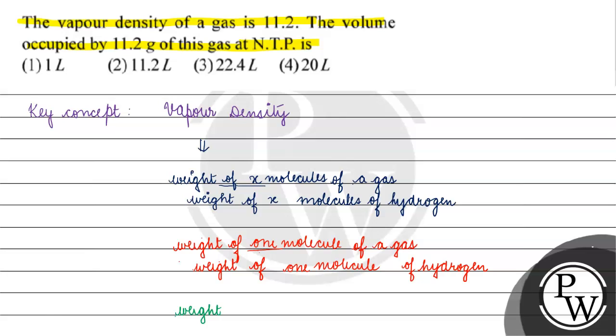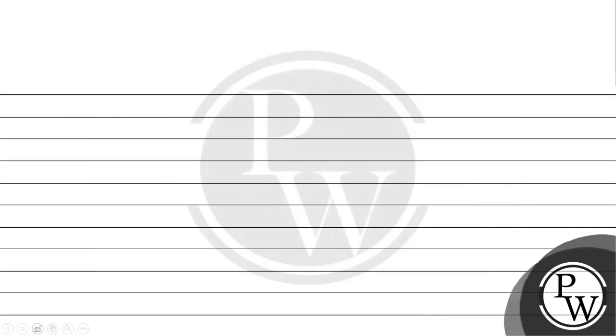Weight of 1 molecule of a gas divided by weight of 1 atom of hydrogen. This is why we have a vapor density which is basically equal to molecular mass by 2.